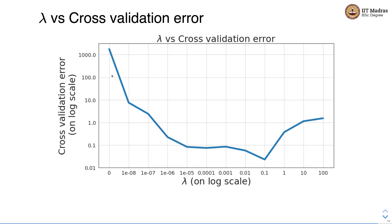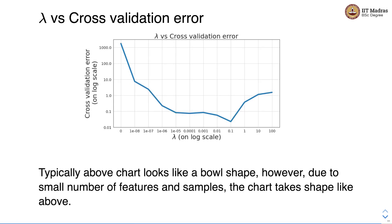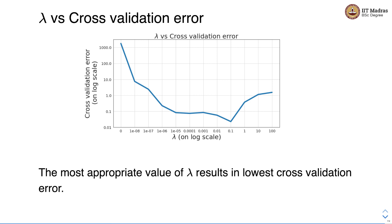We have shown a sample run of the procedure for choosing the value of lambda. On the x-axis, we have values of lambda going from smaller to larger values. On the y-axis, we have the cross-validation error. Typically, this chart has a bowl-shaped appearance. However, due to the small number of features and samples, the chart here is not exactly bowl-shaped but can be approximated as such. The most appropriate value of lambda results in the lowest cross-validation error. In this case, the most appropriate value of lambda seems to be 0.1.